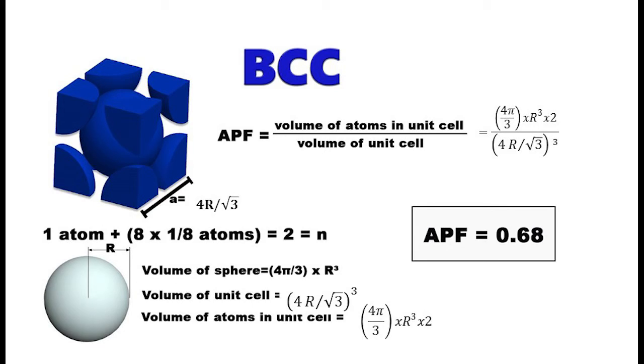The equation for atomic packing factor is the volume of atoms in a unit cell divided by volume of unit cell. Both values we have already calculated. This gives us 4π over 3 times r cubed times 2, all divided by 4r divided by square root of 3 cubed. Once this value is simplified, the r's cancel out, and we get the atomic packing factor of 0.68. This means that 68% of the unit cell is filled with atoms.